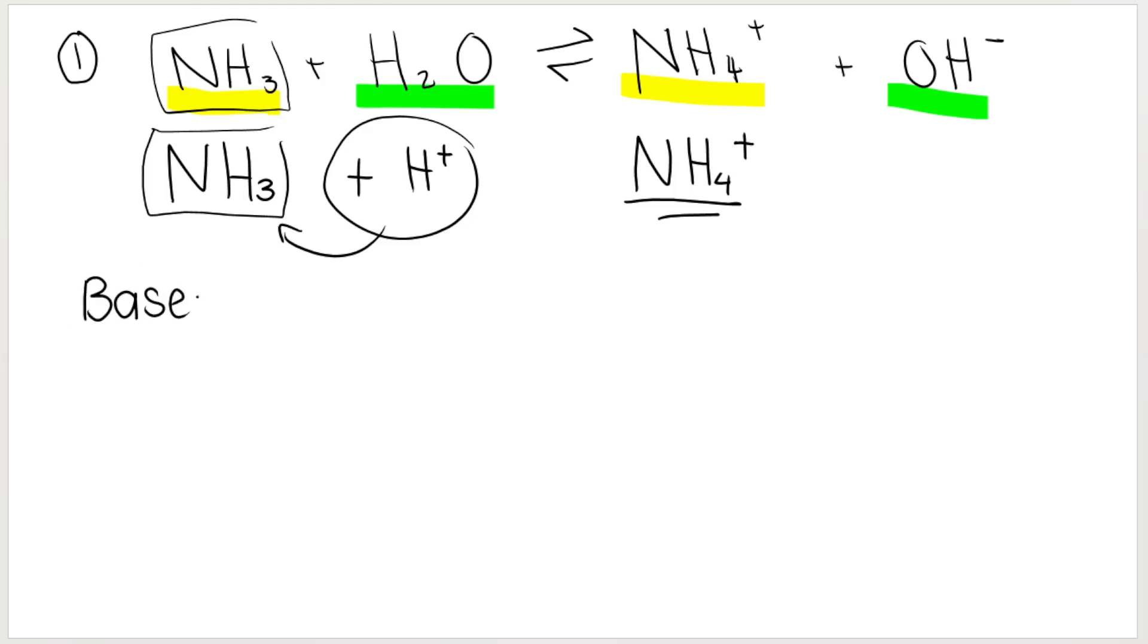What that means is NH3 accepted a proton. That makes NH3 my base. So my base is NH3. NH3, once it accepted the proton, it formed the conjugate acid, NH4+.